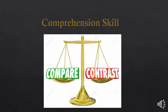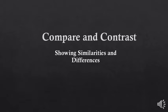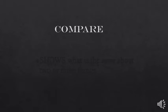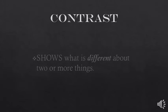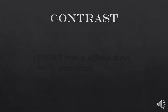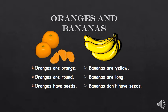The comprehension skill for this lesson is compare and contrast. To compare means to show similarities, and to contrast means to show differences. For example, comparing oranges and bananas: the common points are that you can eat both, they are both fruits, and you have to peel both of them to eat — these are similarities. To contrast: oranges are orange, bananas are yellow; oranges are round, bananas are long; oranges have seeds, bananas do not — these are differences.